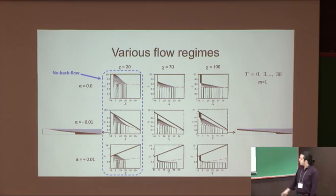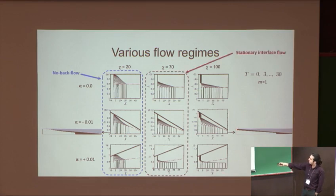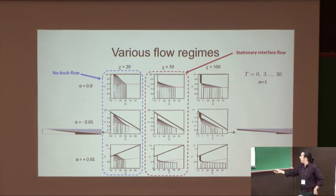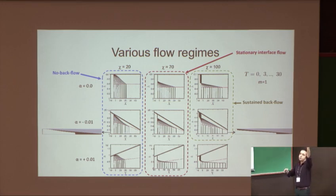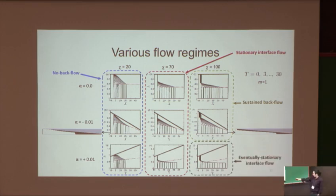So we characterize the different flow regimes: no backflow regime for small chis. Going to the backflow regime, we have a regime that is at a critical chi, which is a stationary interface flow regime, showing the onset of the backflow. And then you have the backflow. And if you consider the backflow case, we can term it a sustained backflow, meaning that you have a backflow that moves upward all the time.